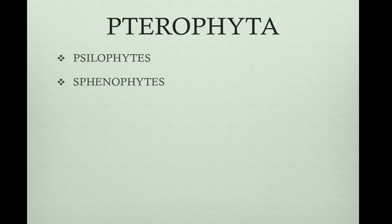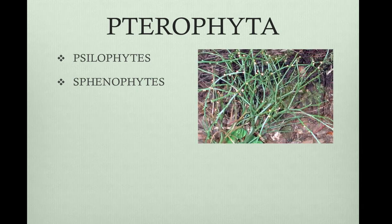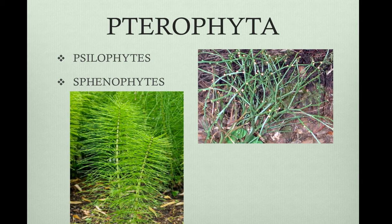The pterophyta includes the psilophytes, which are whisk ferns, because they have Y-like branches. They're very similar to ancient ferns. They lack true leaves and roots. The equisetophytes are horsetails. There are only about 15 different species. They grow in marshes, stream banks, and sandy roadsides. They have an upright stem, most of which is photosynthetic. They have rhizomes, which are horizontal stems, and they have true roots. They also have rings of small leaves and cones at the tip, which are clusters of sporophylls, and they have leaves with sporangia.